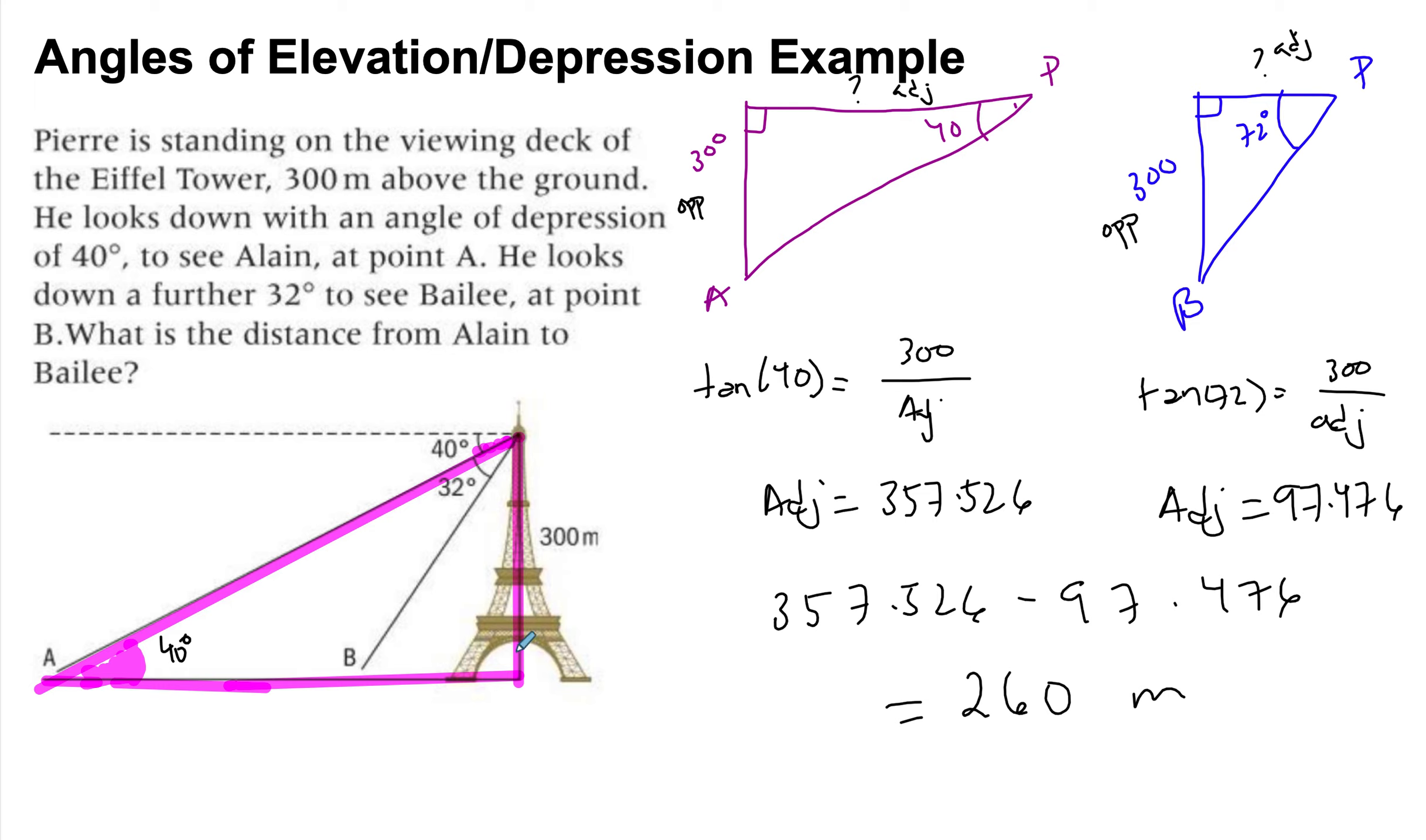So I can take the one here and I could look at this being the 40 degrees, this being the 300. So this is the distance from Alain to Pierre. When I say Alain to Pierre, sorry, Alain to Pierre, I don't mean this line of sight. I mean just the horizontal distance.